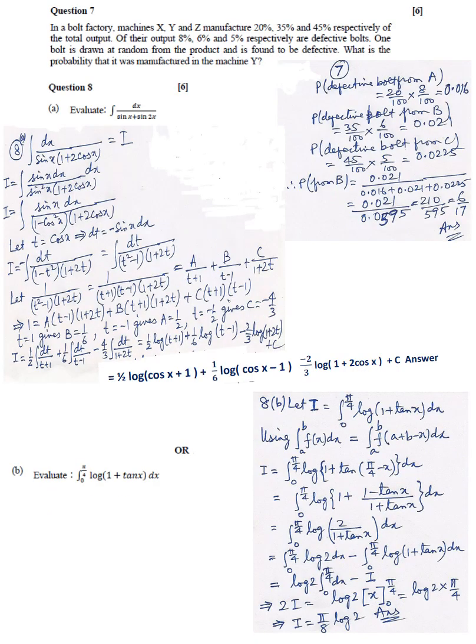Question 7: Answer 6 upon 17. Question 8A: Answer 5 cos X plus 1 plus 1 upon 6 log cos